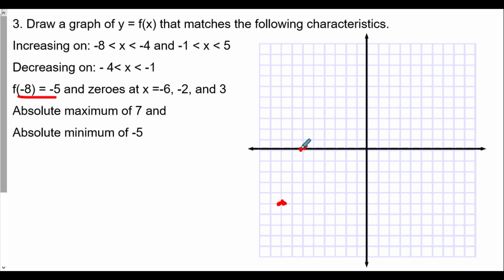We have a zero at negative 2, so negative 2 comma 0 is another point. And at x equals 3, we have another zero at 3 comma 0. Whenever we're given a situation like this to sketch a graph, it could be a piecewise function of linear pieces, or it could be curves, as long as it has the characteristics of increasing from x equals negative 8 to negative 4, and then from negative 1 to positive 5. The coordinates should definitely be applied.